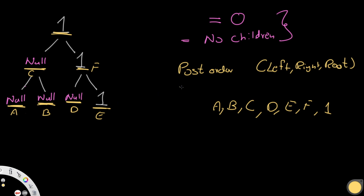So in simple words, we're going to do a post-order traversal and at each node we check whether or not we have to prune it. If we prune A and prune B, and if C also has a value of zero, then C gets pruned as well. But if C had a value of one, even though it has no children, it does not get pruned. This is the order we're working with, and now we'll see how this looks in code.